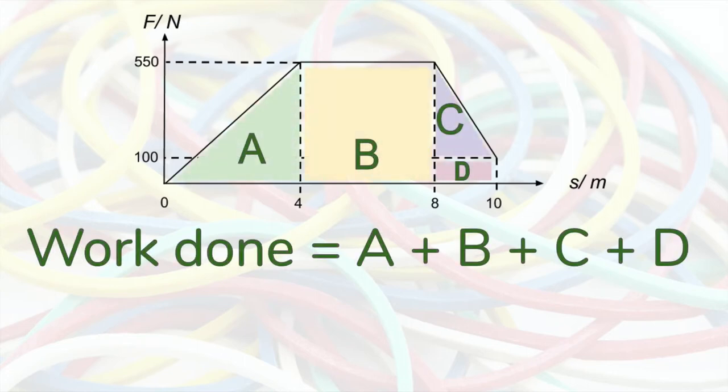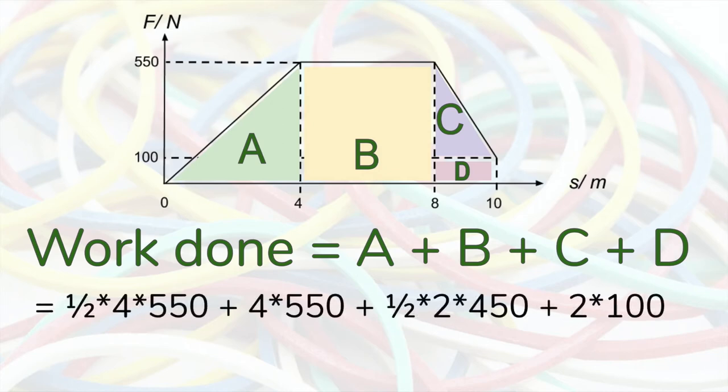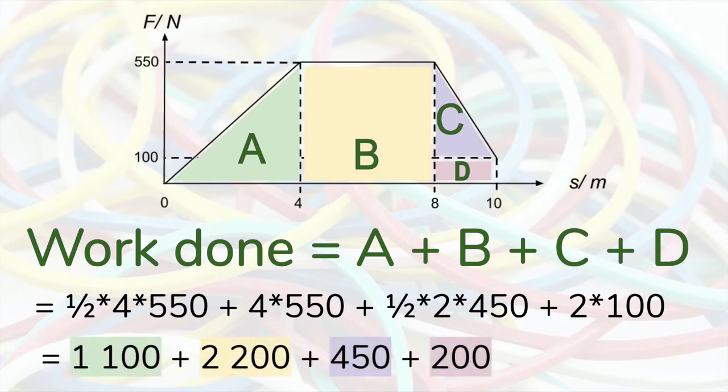This graph can be split into triangles A and C and rectangles B and D, and the total of their areas will be the work done by the variable force. The areas of the triangles is half their base times their height, and the rectangles' areas are the products of their sides. The total work done is 3950 joules.